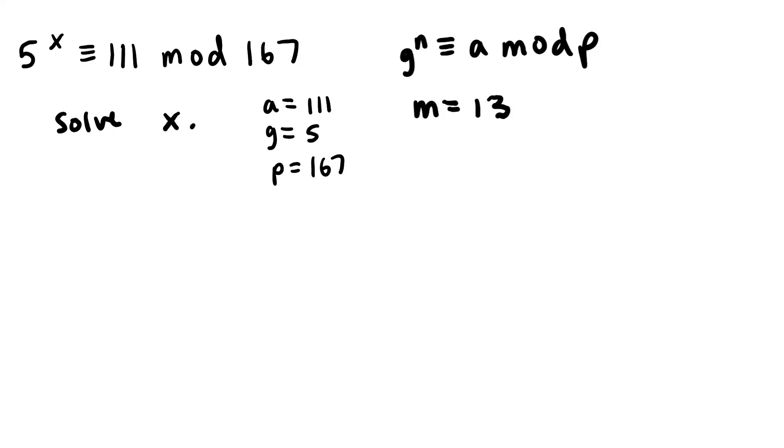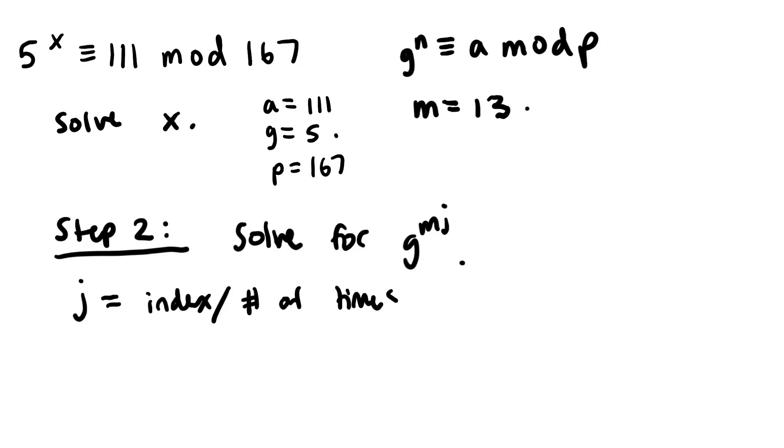So now that we have our m value, we can go to step 2. Now step 2 is very straightforward. We just have to solve for g to the mj. Now we have our g value, which is 5, and we have our m value, which is 13. We don't have our j value. So our j value, as I said in my last video, is basically the index, or the amount of times we must solve for g to the mj, like the iterations, essentially.